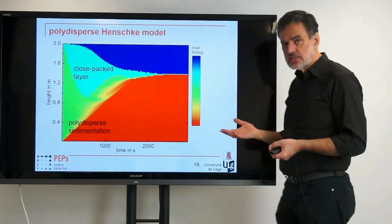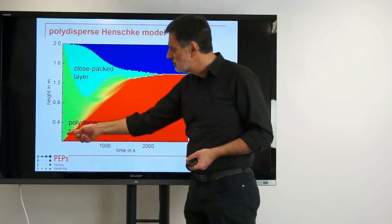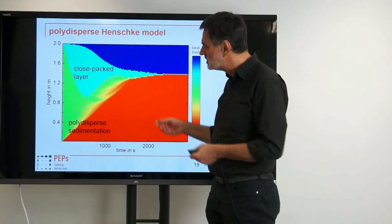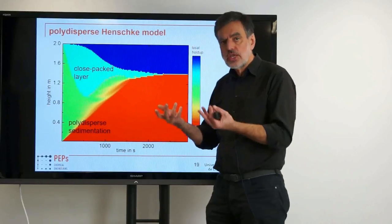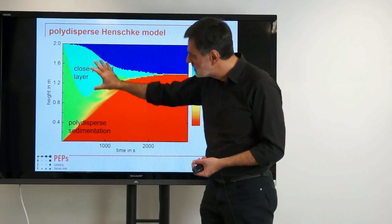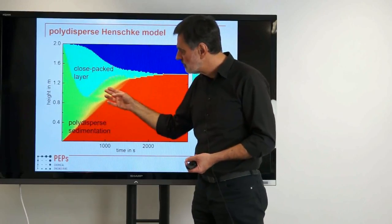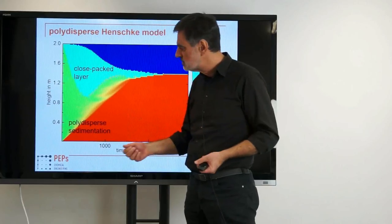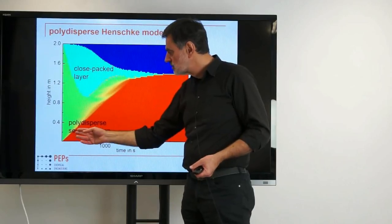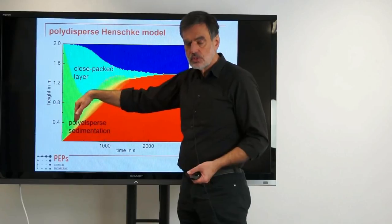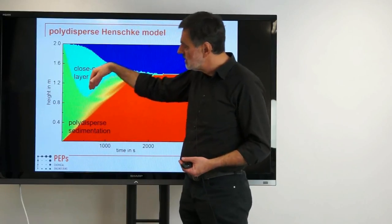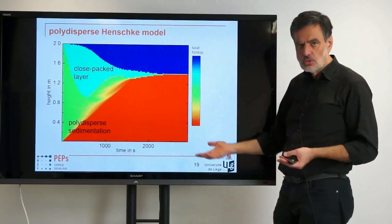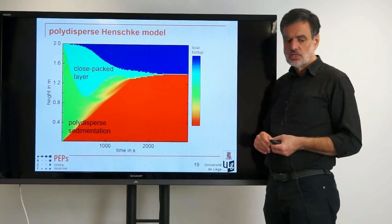This is a batch settling simulation. The height is 2 meters and the time scale is shown here. Over the height you see what is happening, with a color code representing the concentration of the organic phase. Here you have the close-packed layer; down here you have polydispersed sedimentation because there are some small drops present. We account for this polydispersity — larger drops are moving faster, smaller drops are lagging behind, so the higher hold-up of the drop phase decays more quickly than that induced by the smaller drops. We can quantify that exactly and predict how such a settling process really works.